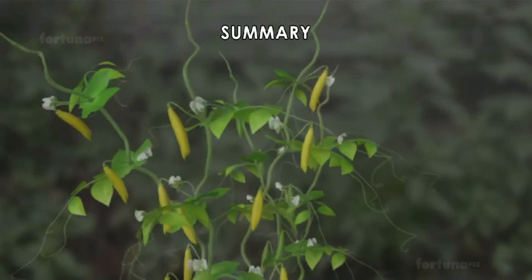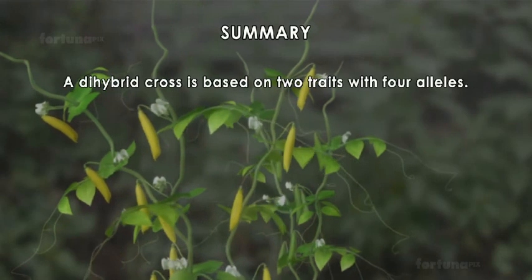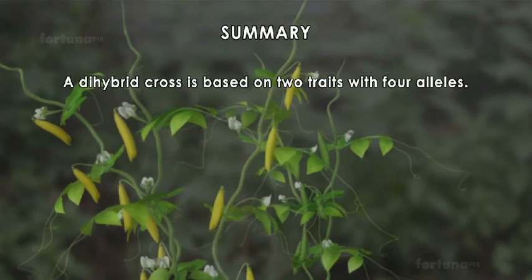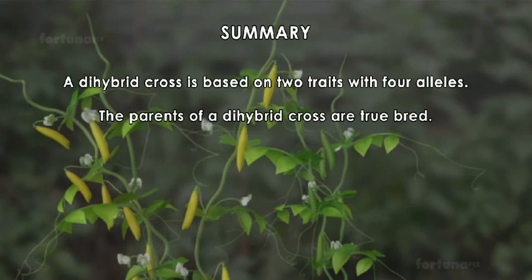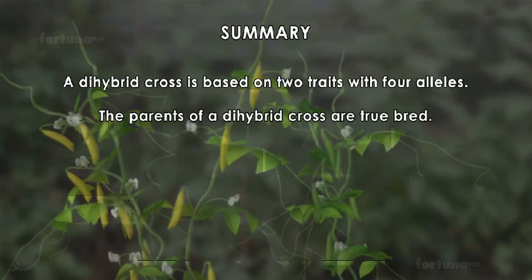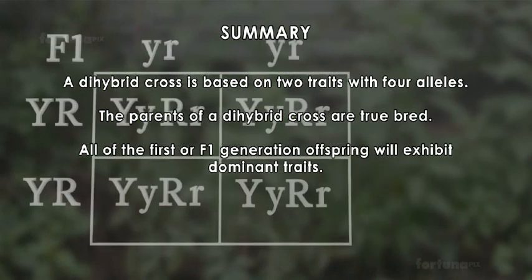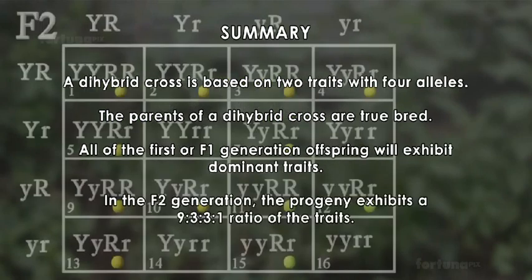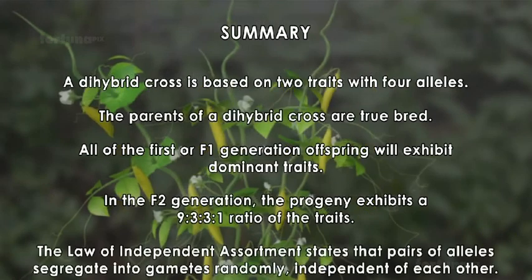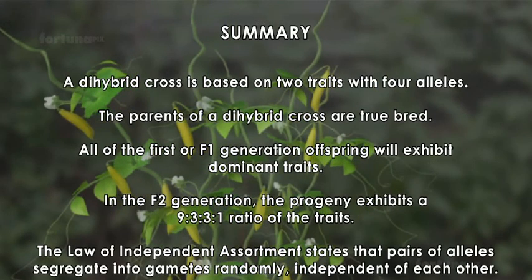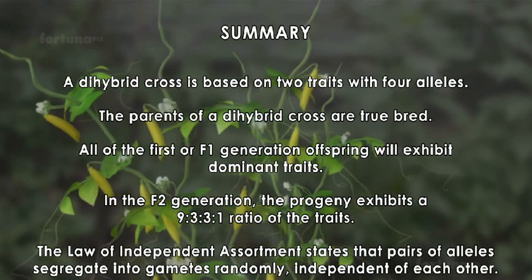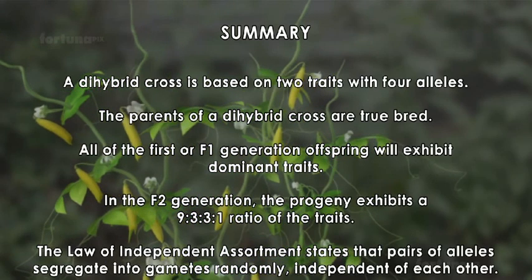Summary: A dihybrid cross is based on two traits with four alleles. The parents of a dihybrid cross are true bred. All of the first, or F1 generation offspring will exhibit dominant traits. In the F2 generation, the progeny exhibits a 9 to 3 to 3 to 1 ratio of the traits. The law of independent assortment states that pairs of alleles segregate into gametes randomly, independent of each other.